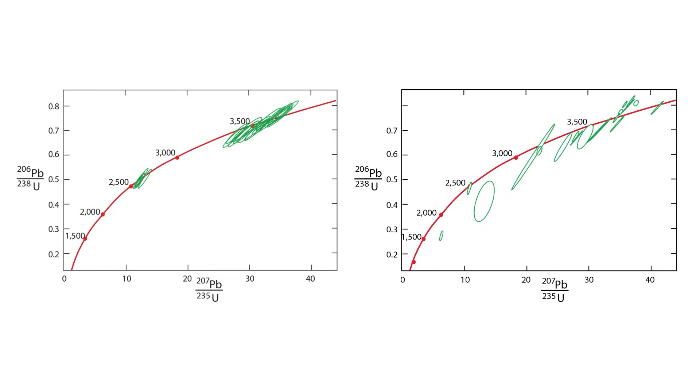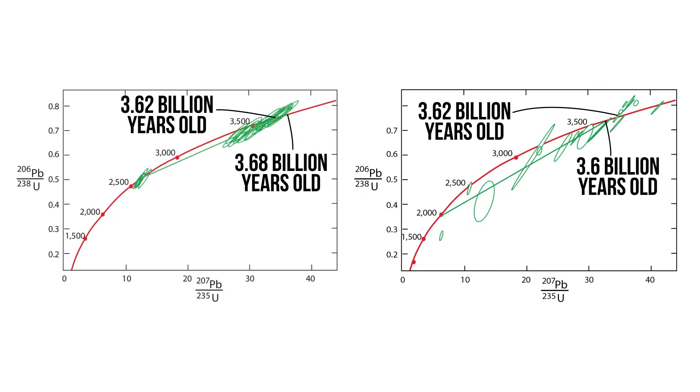As you see from the data plotted on the concordia diagrams, almost all of the analyzed zircon have lost lead, and the data form an array along straight lines. Zircons on the left plot define a line that intersects concordia around 3.68 billion years, and on the right around 3.6 billion years. Both also have clusters of analyses that plot on concordia at around 3.62 billion years.